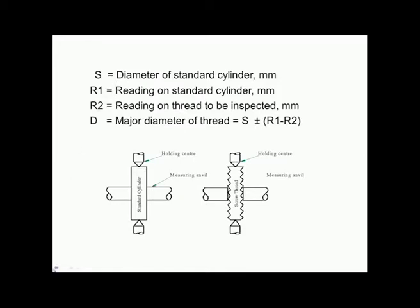S is the diameter of the standard cylinder (plain plug gauges are used). R1 is the reading on the standard cylinder and R2 is the reading on the thread to be inspected. The major diameter D is calculated using the relationship: D = S ± (R1 − R2). Whether plus or minus is used depends on whether the standard cylinder diameter is greater than or smaller than the major diameter of the thread. An outside micrometer can also be conveniently used for measurement of major diameter, taking care not to over-pressurize the thread crests.